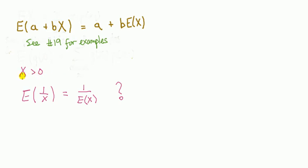Now let me ask you a question. For random variable X that takes only positive values, is this statement true or false? Expected value of 1 over X is equal to 1 over the mean of X, like 1 over μ, is that true or false?